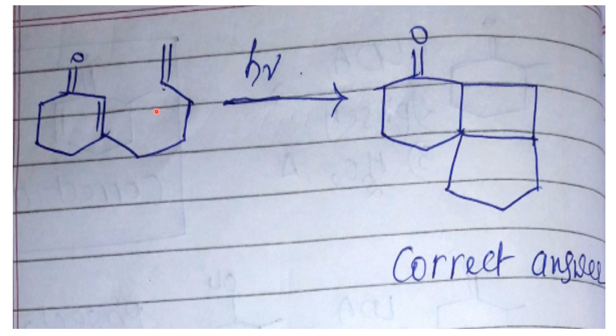A new condition has been given for this substrate and the correct answer for this one is a 2+2 cycloaddition on this alpha-beta unsaturated double bond, where this double bond and this double bond will react with each other. The radicals will make this four-membered ring. This should be the correct answer.